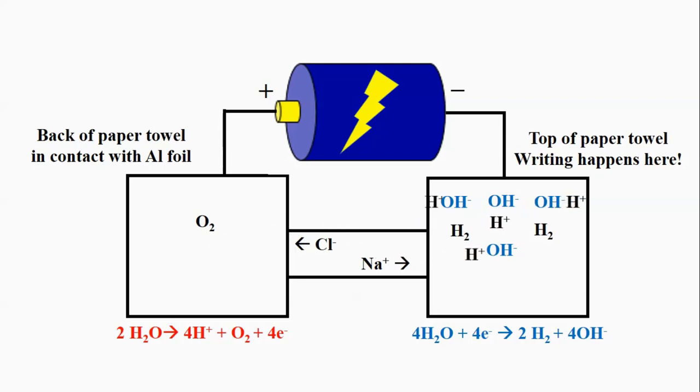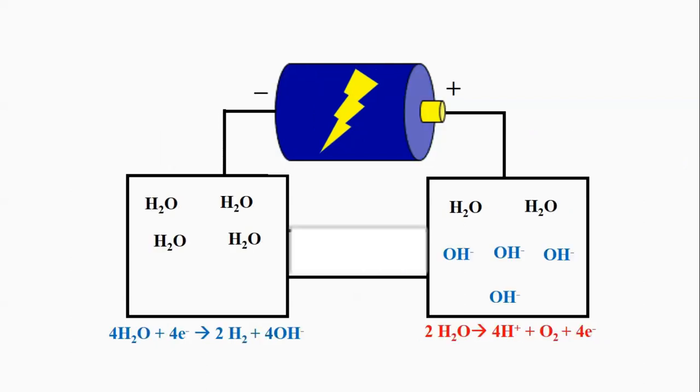Protons react with the hydroxide ions and neutralize them causing the blue color to disappear. This also happens when we reverse the polarity of the battery. If we have a blue color on the top of the paper towel and the polarity is reversed, in this case the battery will remove electrons from water on the top of the paper towel and protons are formed. Those protons react with the hydroxide ions neutralizing them and causing the blue color to disappear.